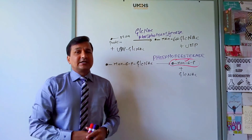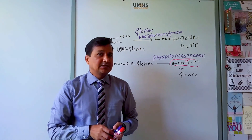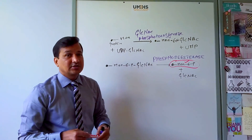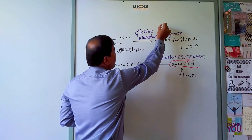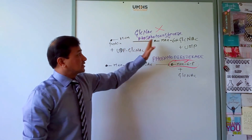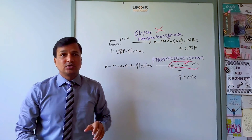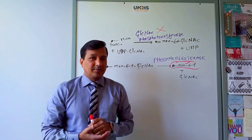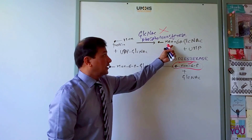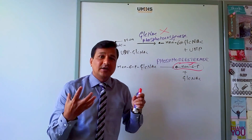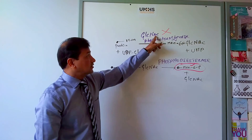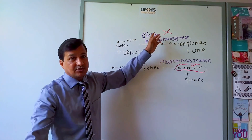Now let's come to I-cell disease. What is the problem in I-cell disease? In I-cell disease, the gene coding for GlcNAc phosphotransferase enzyme is defective — it is a mutated gene. This means GlcNAc phosphotransferase is defective and is not able to add mannose 6-phosphate GlcNAc to the protein which is meant to go to the lysosome. Because of this, the protein in the lumen of the endoplasmic reticulum is not phosphorylated at the 6th position of mannose. So if the chemical marker mannose 6-phosphate is not added due to absent or defective GlcNAc phosphotransferase, what happens?